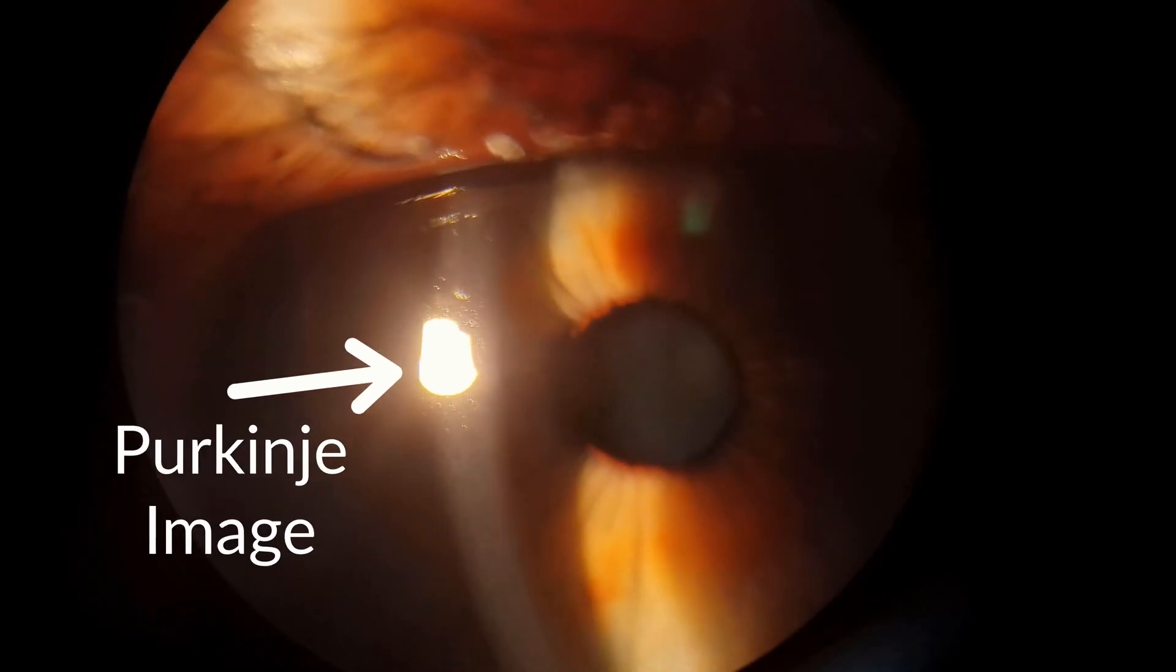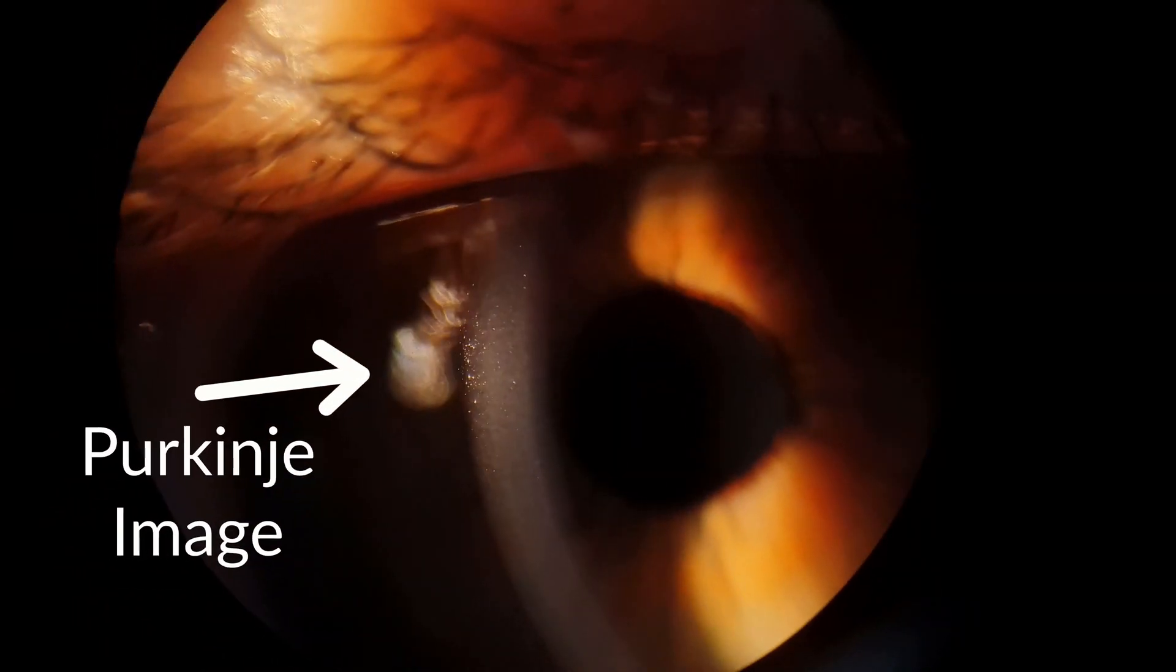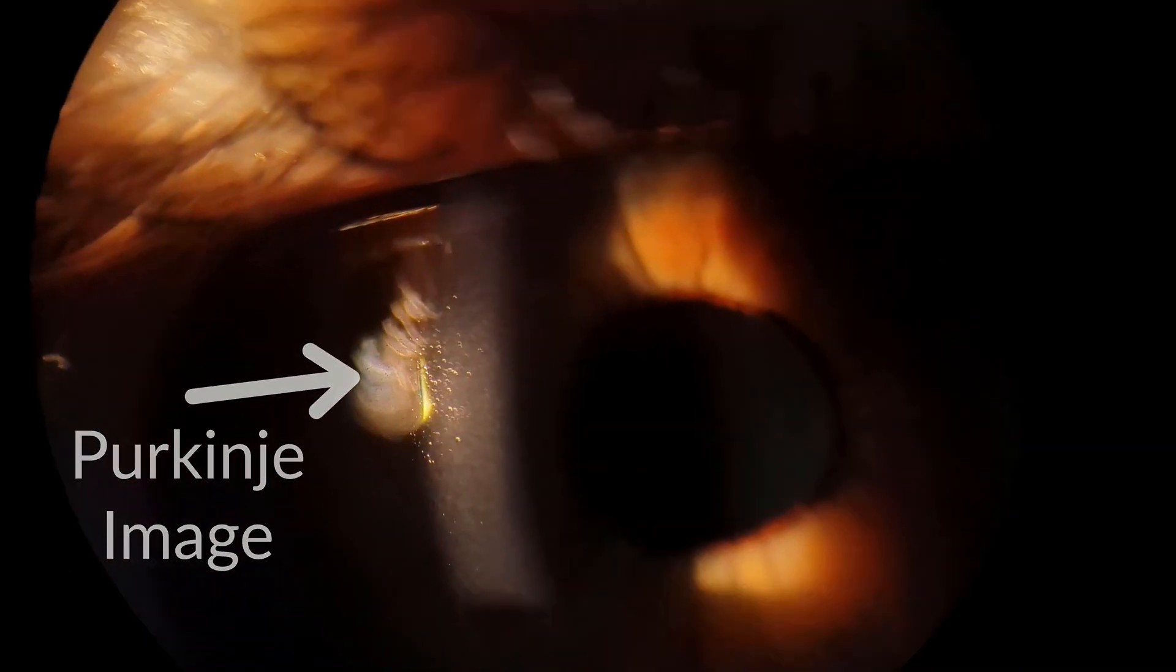Adjacent to this bright reflection, focus on the slightly dimmer area and increase your magnification to around 40. You can see the mosaic pattern of the endothelial cells.